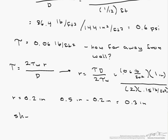Where is our shear stress equal to 0? Our shear stress equals 0 when r equals 0, and that would be considered 0.5 inches from our wall.